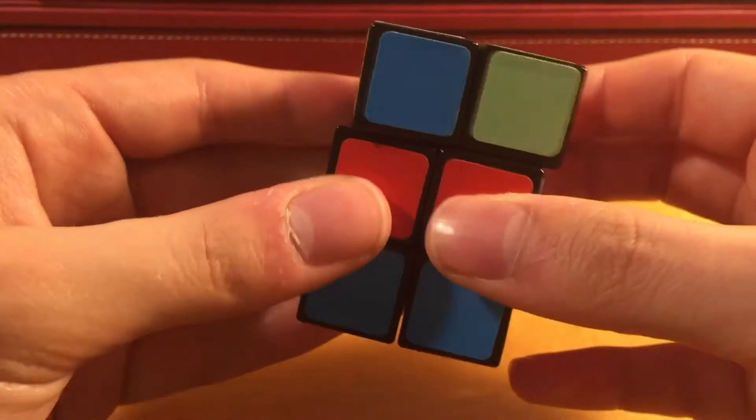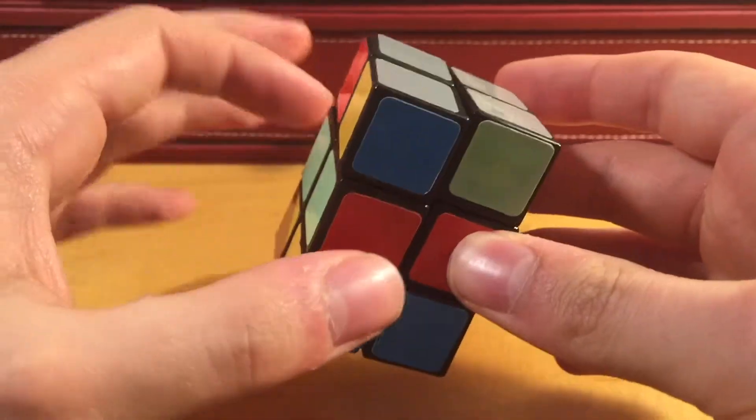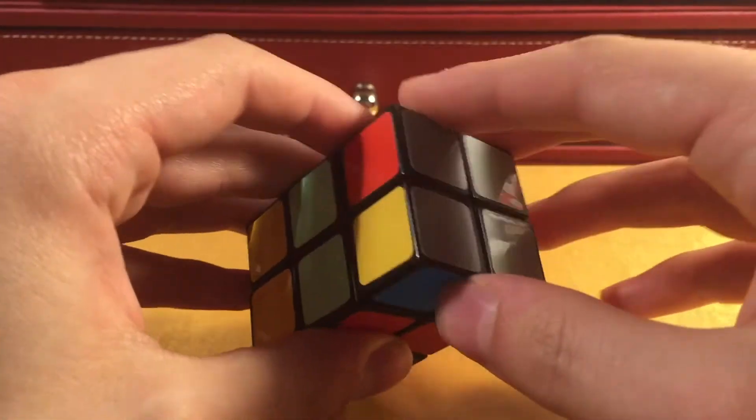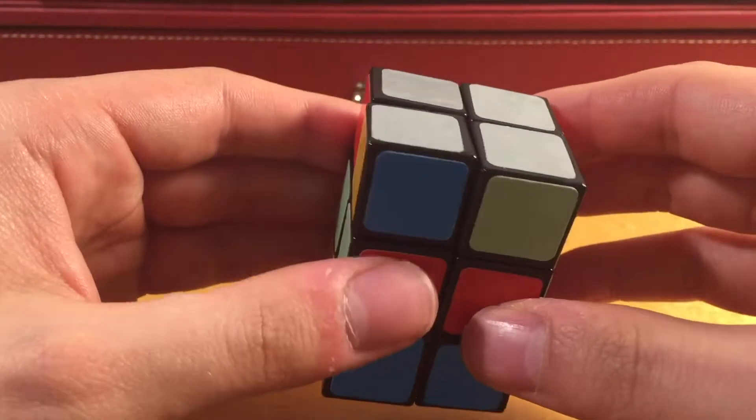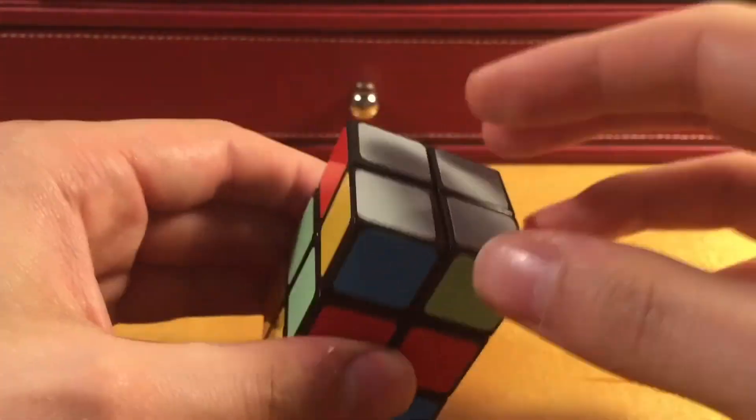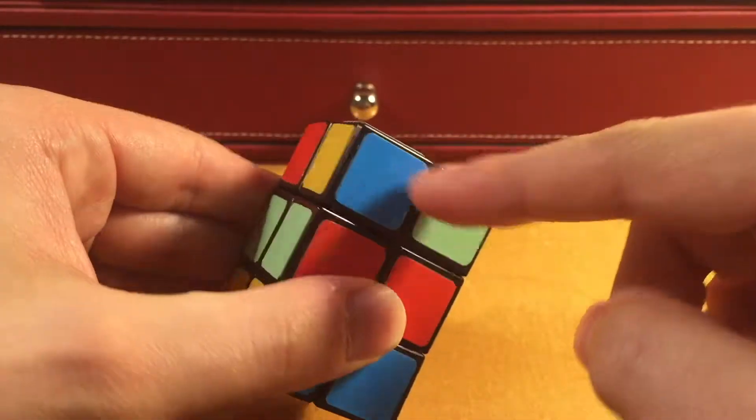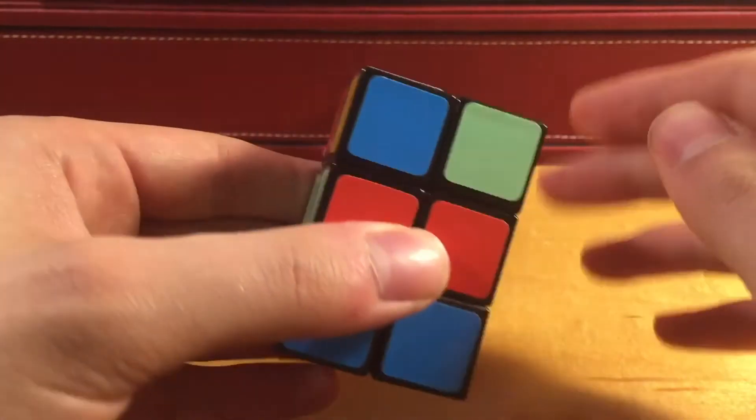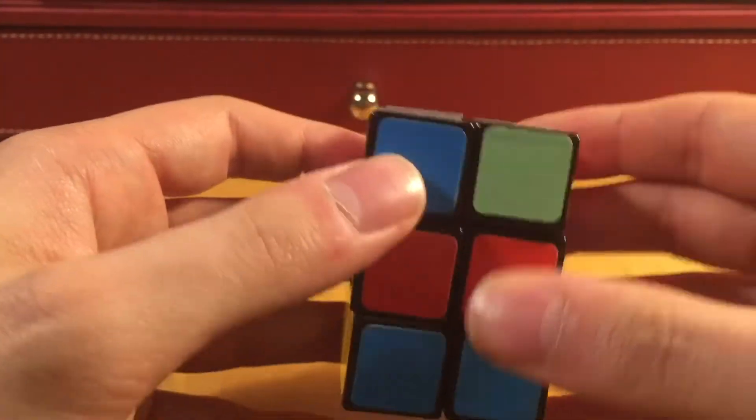Now, we're not going to focus on the middle layer, we're going to focus on that last. Next, what we're going to want to do is correctly solve the top face. Now, there's one of three states, you can either have it in this state, the state that I'm going to bring it to next, or it's completely solved. If you have it in this state, you're going to need to do the following algorithm twice, and if it's in the state that I'm going to bring it to, you only need to do it once.